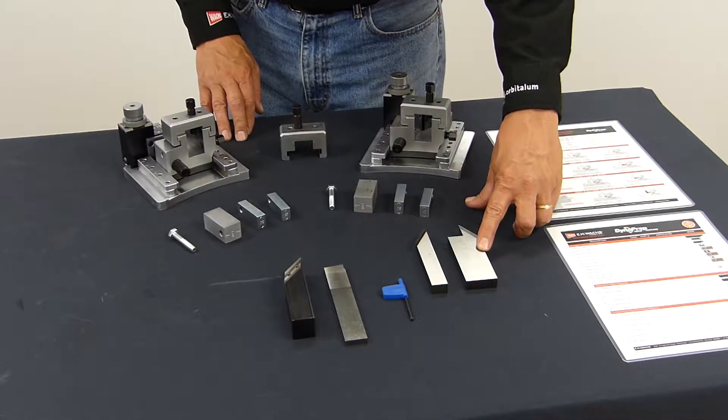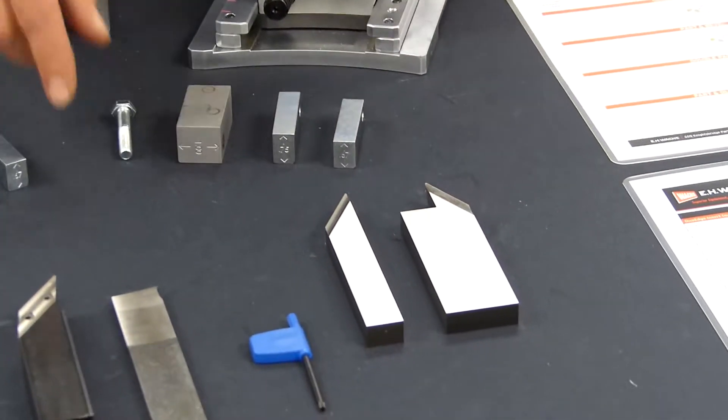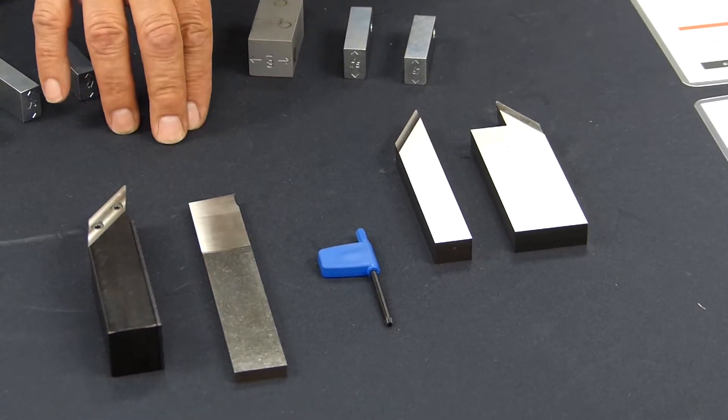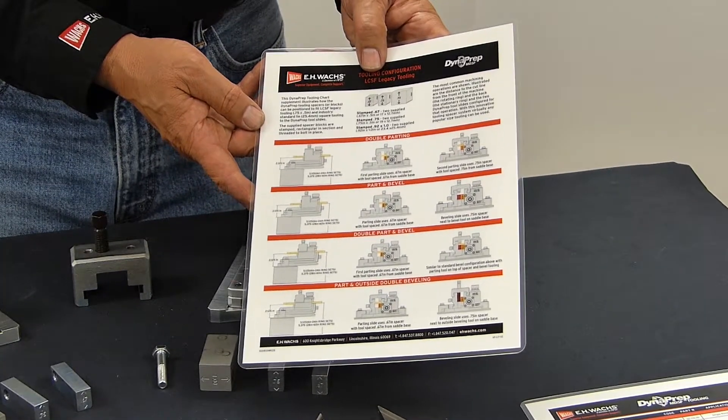Here you see we have an outside bevel and an inside bevel tool bit and the standard parting blade which comes with the MDSF. All of the different setups are shown on this sheet and we'll set them up now.